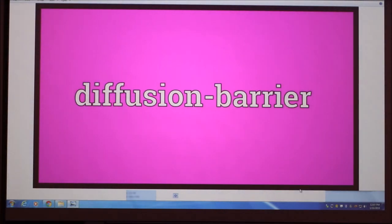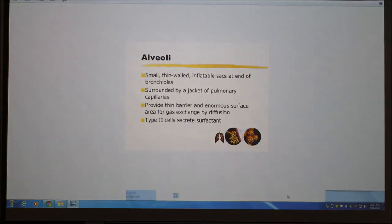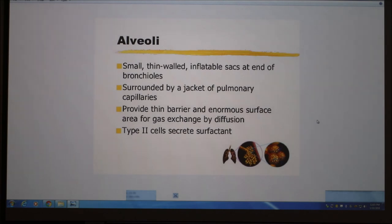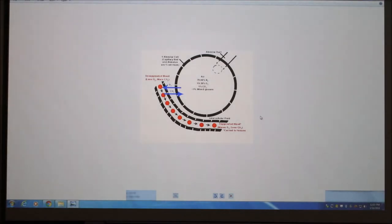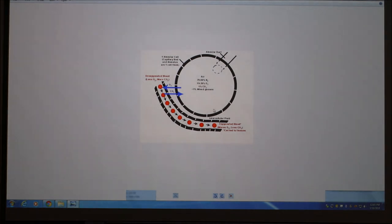There's the diffusion barrier. The alveoli are thin-walled, surrounded by a lot of blood vessels. It's a thin barrier. And you have to have an enormous surface area. In that air sac, there are some cells, so remember where my mouse is right there.